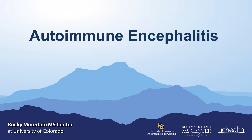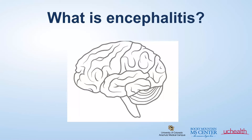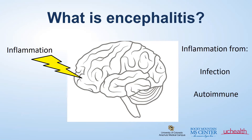Starting out, what is encephalitis? We need to define that. Encephalitis is inflammation that directly affects the tissue of the brain. This often causes symptoms of memory or cognitive dysfunction, personality change, and sometimes even seizures. When severe, patients are often hospitalized, and sometimes they can have a decreased level of consciousness. This inflammation can be caused by different reasons, with the two most common forms being infection or autoimmune disease.